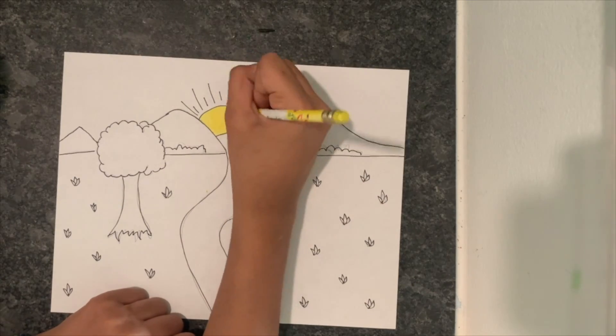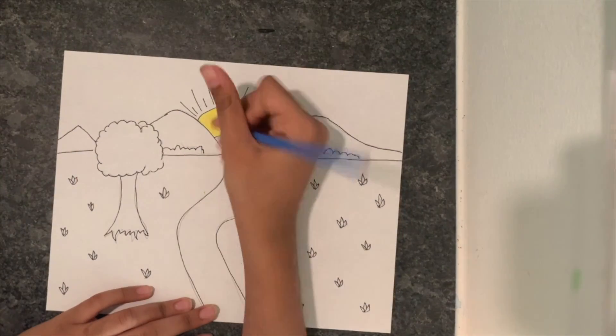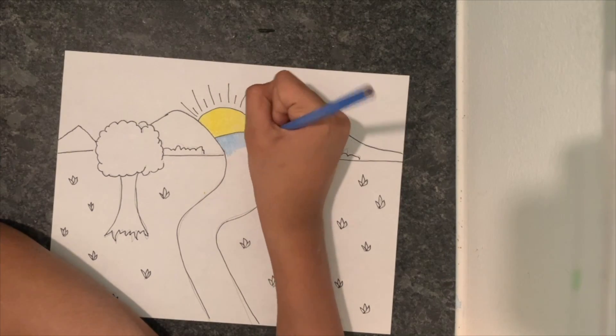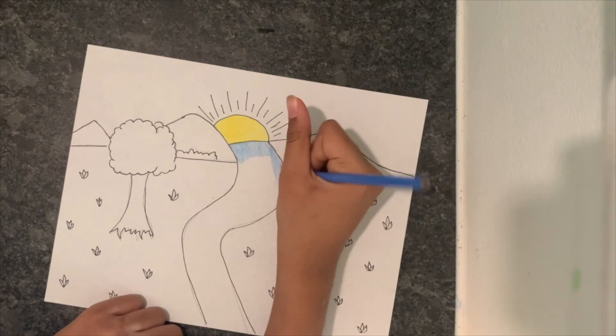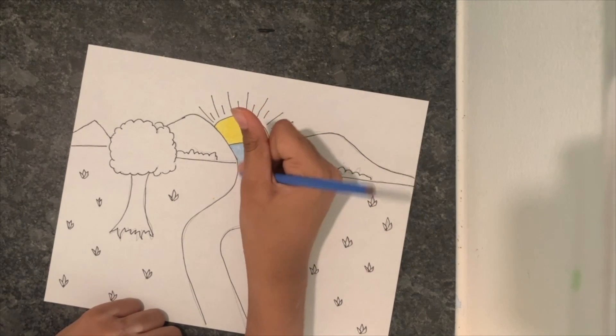You can also use markers, crayons, or paint to color this. For the river I chose this light blue color, but you can also use a darker blue color. Just make sure that when you're coloring with pencil you do it in even strokes, that way your painting looks nice and neat.